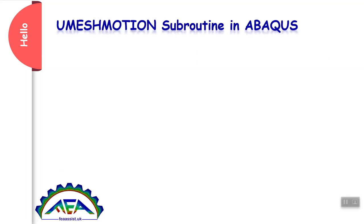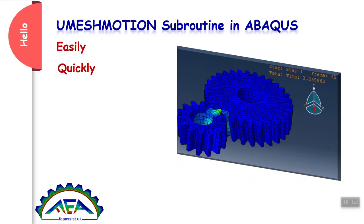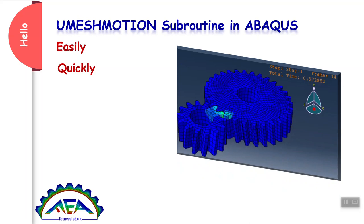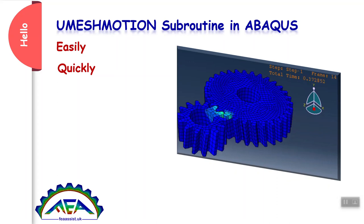Hello. You want to learn the UMESHMOTION subroutine in Abaqus easily and quickly? UMESHMOTION is a subroutine to define mesh displacement or mesh velocity in Abaqus. This subroutine is mainly used in ALE (Arbitrary Lagrangian-Eulerian) problems to prevent mesh problems in adaptive meshing. Stay with us.